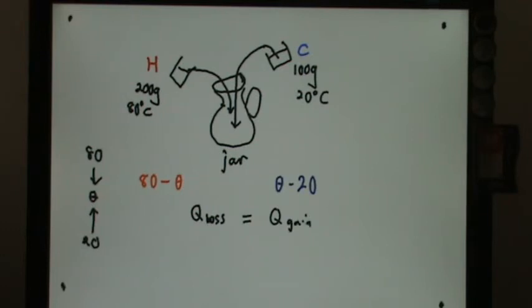We could write M1 C delta theta 1 equals M2 C delta theta 2. The reason is because both are the same substance, I can cancel off C. The similar liquid will be mentioned in the question.